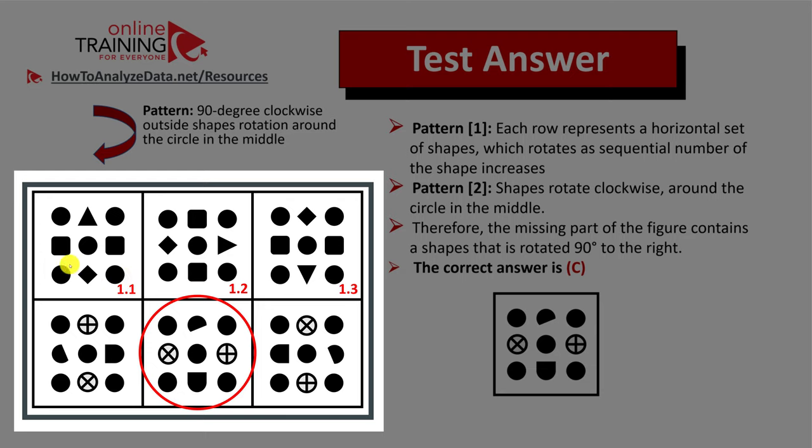Pattern one defines that the shapes go in horizontal rows. For example, this is shape one, this is shape two, and this is shape three. I group them as shape 1.1, meaning that the first one represents the first row shape one.